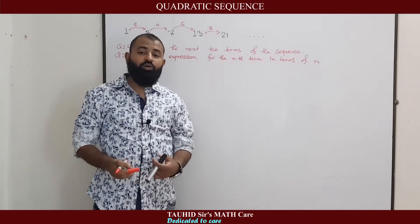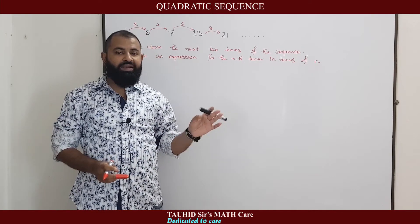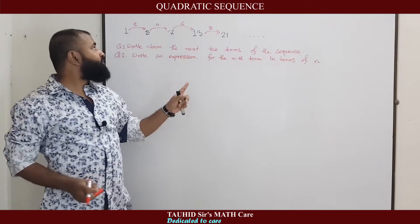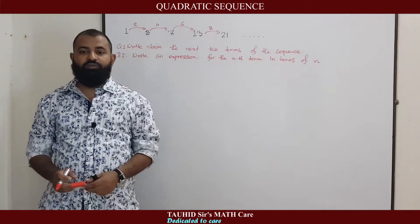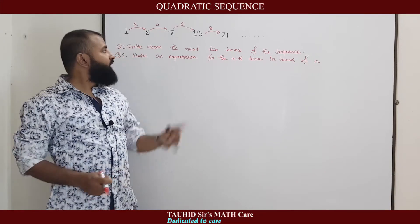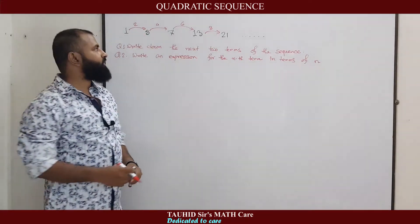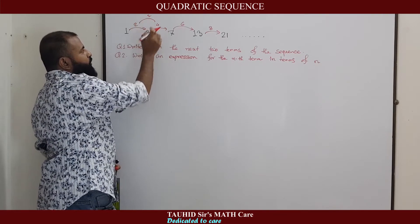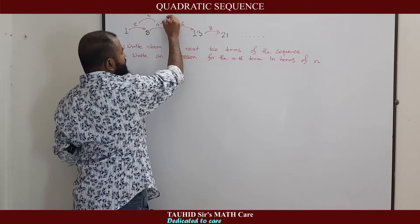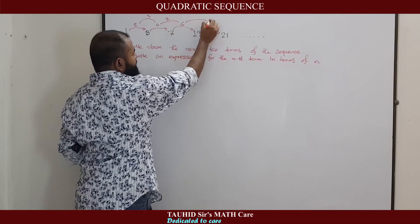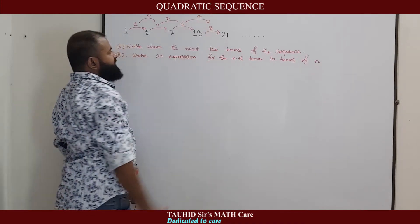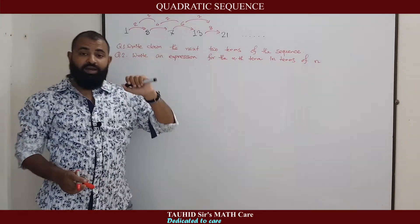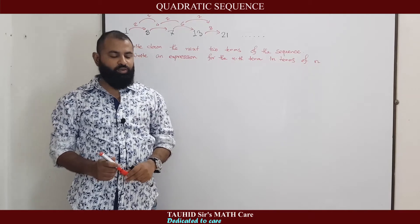In the previous example, where we discussed linear sequence, there we saw that the difference was fixed. But in case of quadratic sequence, the difference is not fixed. Rather, it follows a pattern. The difference of differences: the difference of 2 and 4 is 2, the difference of 4 and 6 is 2, the difference of 6 and 8 is 2. When we see this type of sequence, we will understand that this is a quadratic sequence.